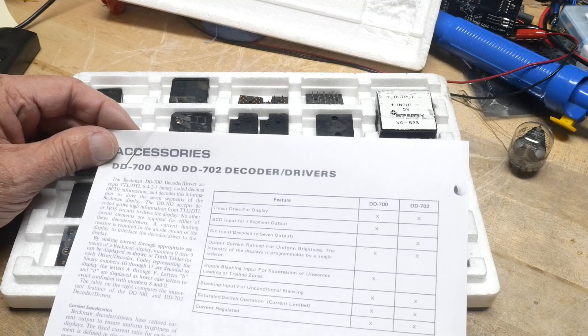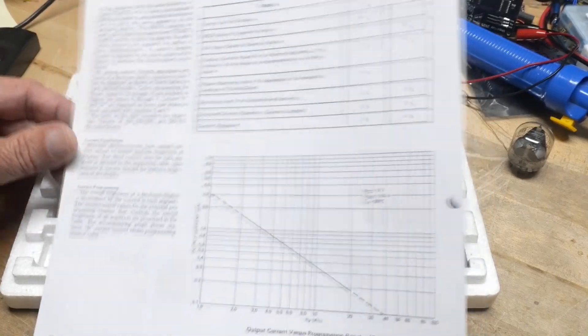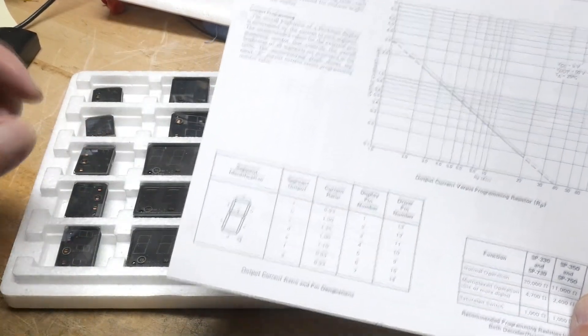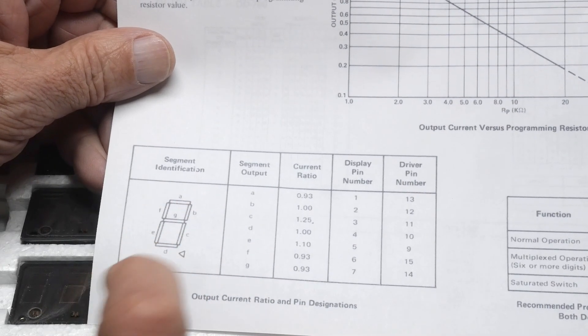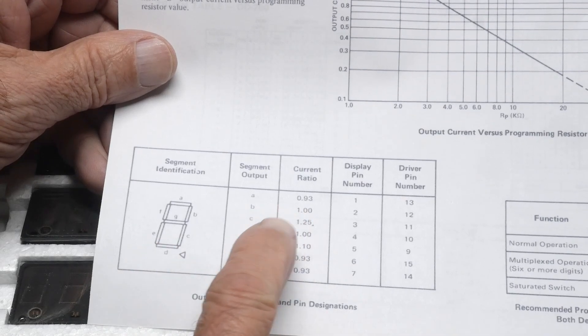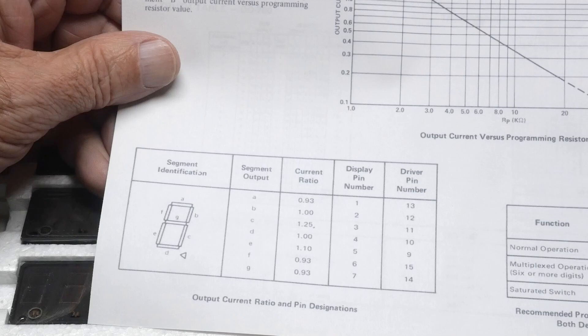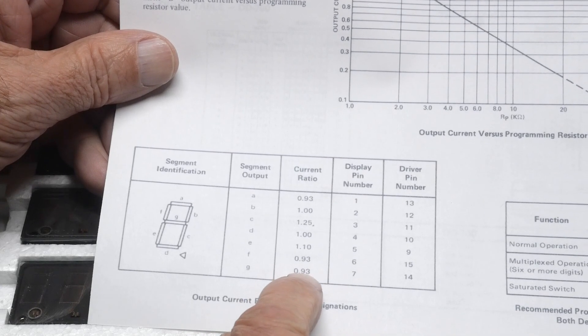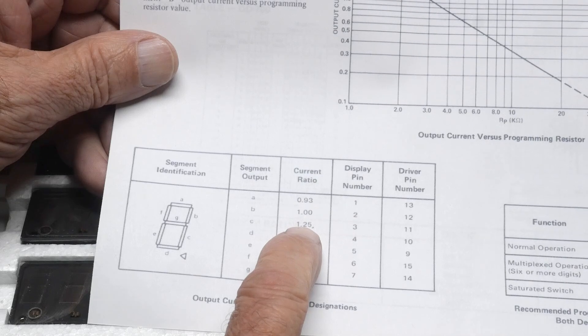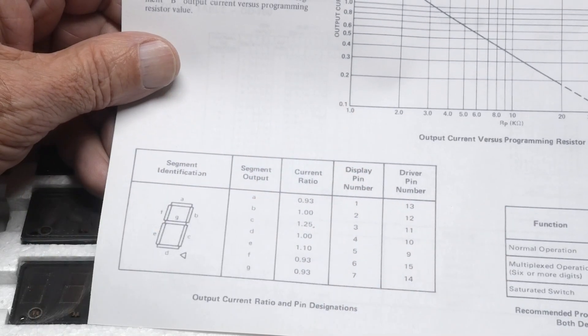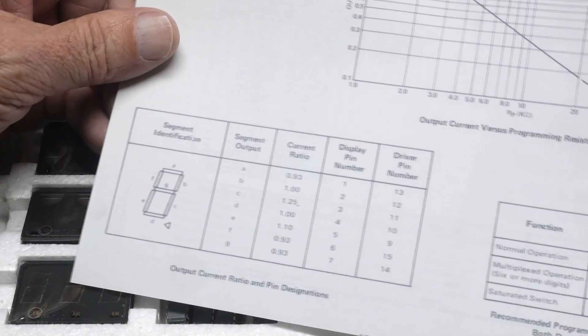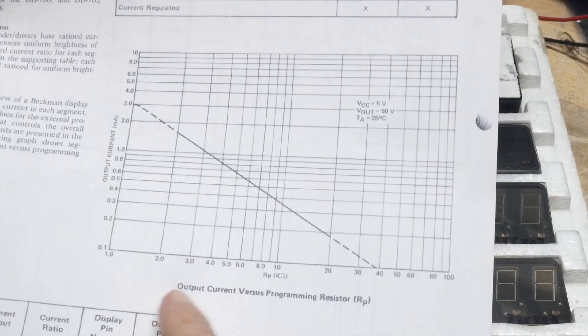Interestingly, each element is slightly different size and so it automatically changes the current for that segment, anywhere from 0.93 to 1.1 or 1.25. C and E should be the same, right? Now they're a little bit different. So somehow it balances them, so that's kind of cool. This graph here is output current versus programming resistor.